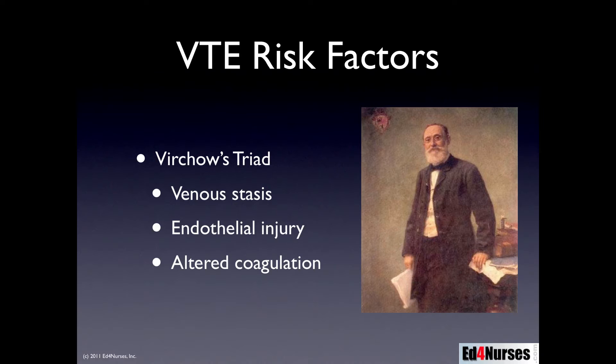Endothelial injury is the second part of Virchow's triad — it refers to injury to the inside lining of the blood vessel. This obviously occurs during surgery because we're cutting through blood vessels. It also happens with trauma and in patients who have atherosclerotic disease or sepsis. Thirdly, we have altered coagulation, which also occurs during surgery, trauma, and sepsis.